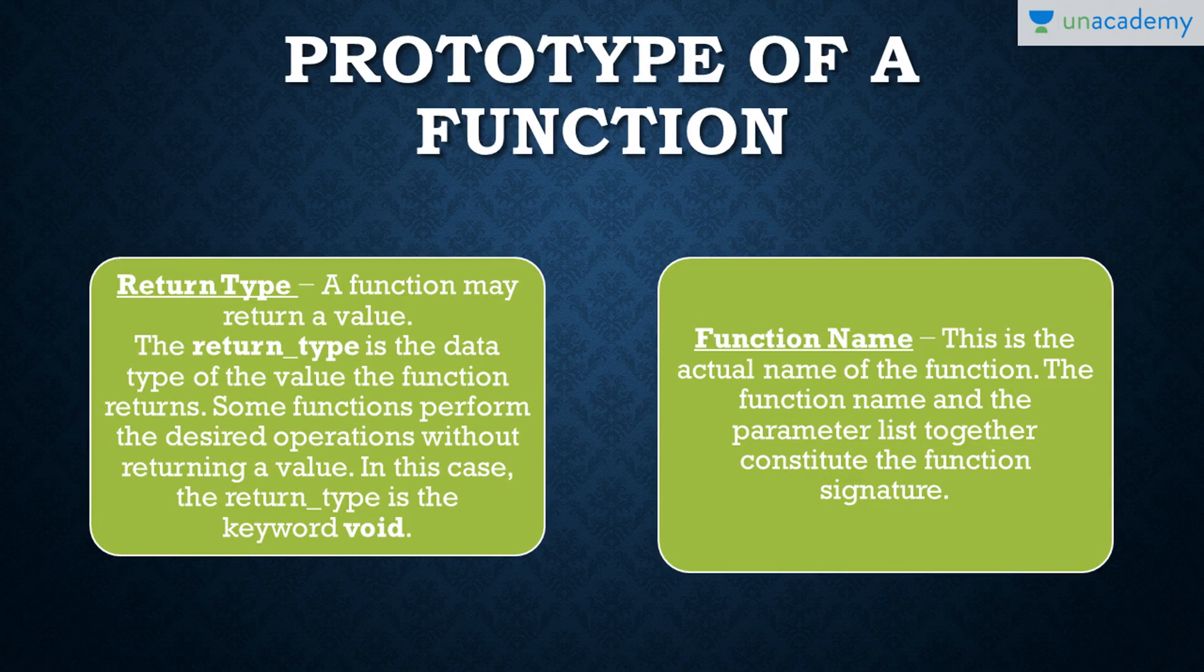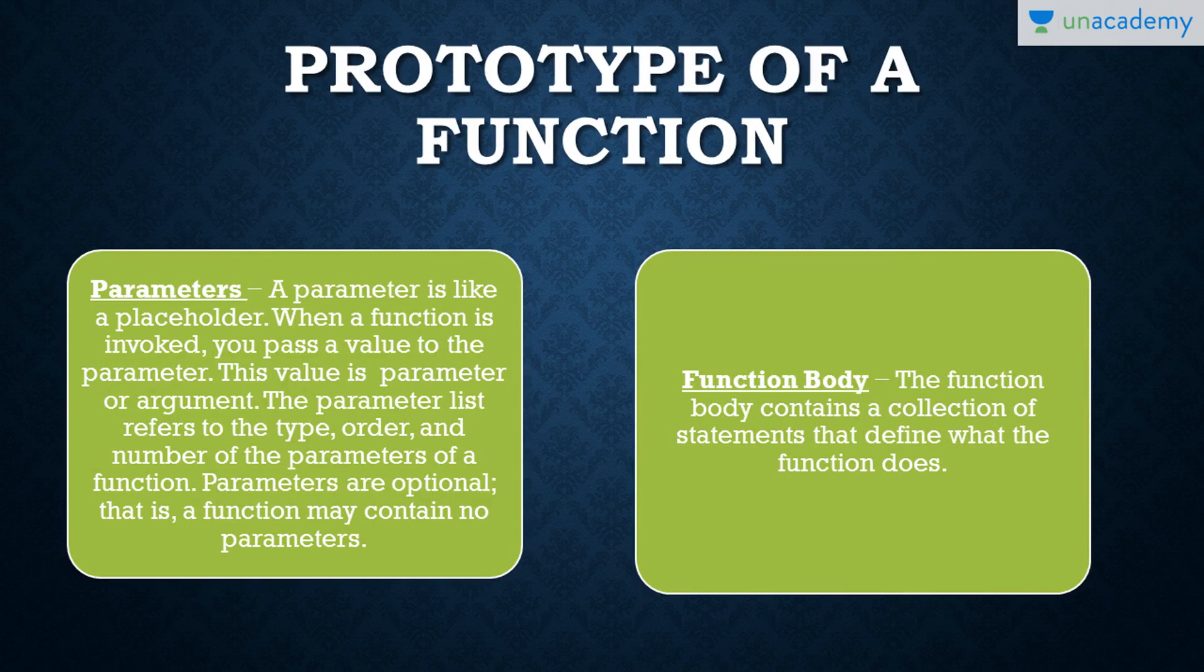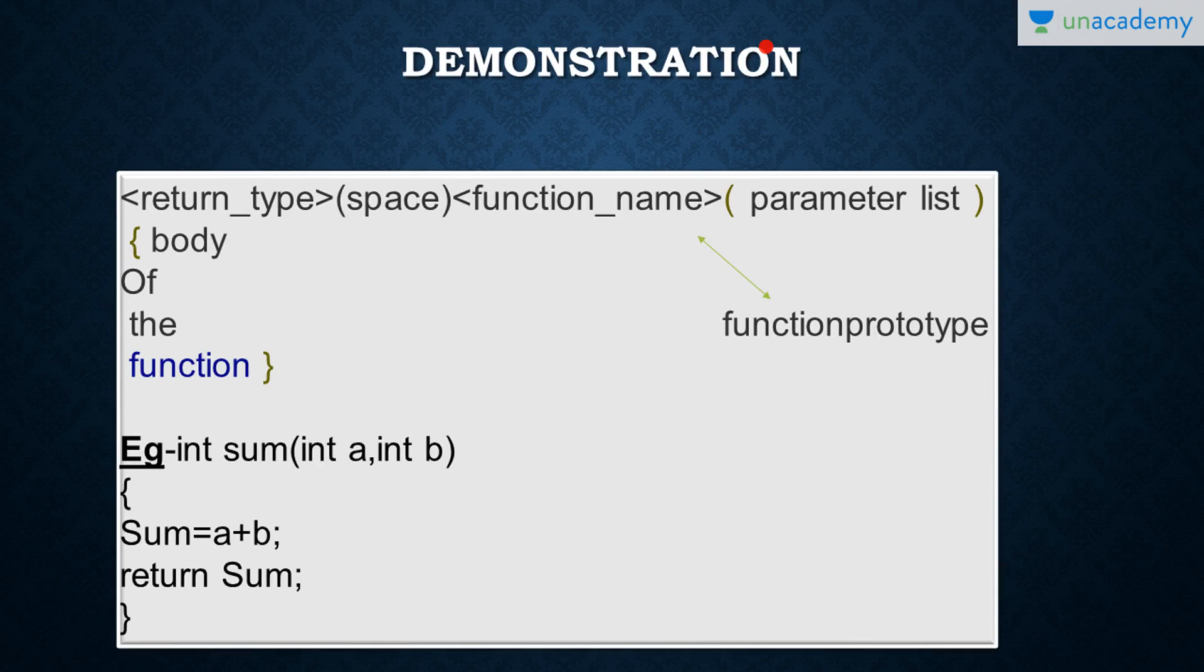Function prototype means the way of writing it: return type, function name, and arguments. Return type is the data type of the value the function returns. Function name is the actual name of the function. Parameters are the number of arguments we pass into the function. Function body is the collection of statements that define what the function does.